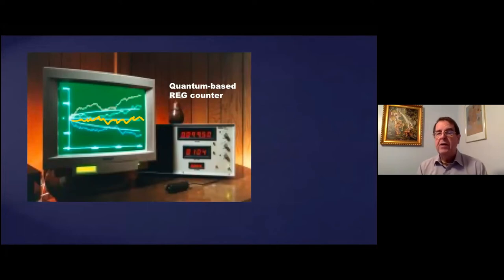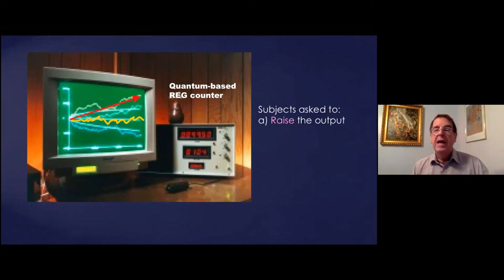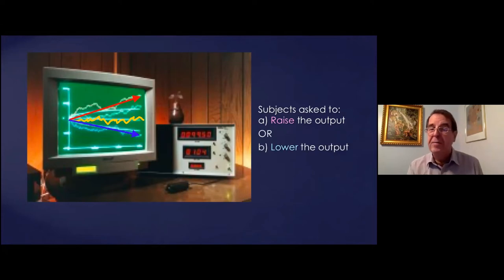And what they used were quantum based random event generators. These are things that produce random output, not from an algorithm, which isn't entirely random, but from quantum tunneling. And in effect, the counter is counting the number of electrons that pass along a wire, come to a negative barrier, but which decide to go quantum and tunnel through that negative barrier rather than being repelled by it and pass along the wire. And you can count that, you can then calibrate your machine. And the subjects, the operators were asked either to raise the output. The baseline output is shown in yellow there. It just bounces around at the base. But the subjects were asked, could you get more electrons to go quantum and raise the output? Or could you get fewer to go quantum and lower the output? And these are the sort of results they came up with.